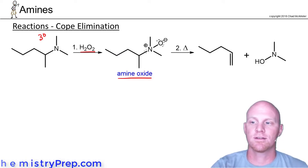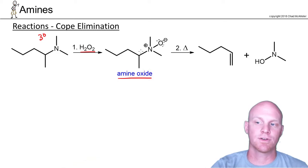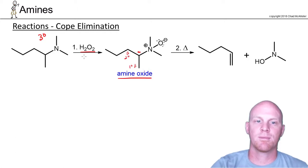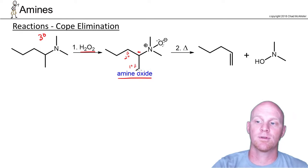If you look here, this nitrogen is the leaving group, and it's attached to this alpha carbon right here. We've got a beta carbon here and a beta carbon here. This one up here is secondary, this one's primary, and we're going to use that less-substituted beta carbon just like in the Hoffman elimination.